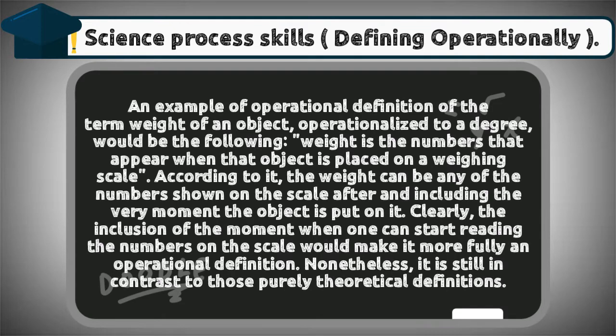An example of an operational definition of the term 'weight of an object,' operationalized to a degree, would be the following: weight is the numbers that appear when that object is placed on a weighing scale. According to it, the weight can be any of the numbers shown on the scale after and including the very moment the object is put on it. Clearly, the inclusion of the moment when one can start reading the numbers on the scale would make it more fully an operational definition. Nonetheless, it is still in contrast to purely theoretical definitions.